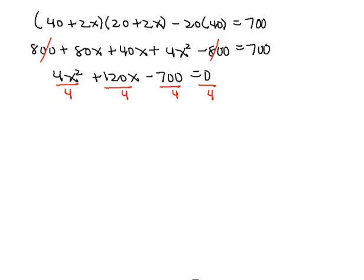So we'll end up then with X squared plus 30X minus 175 equals 0.